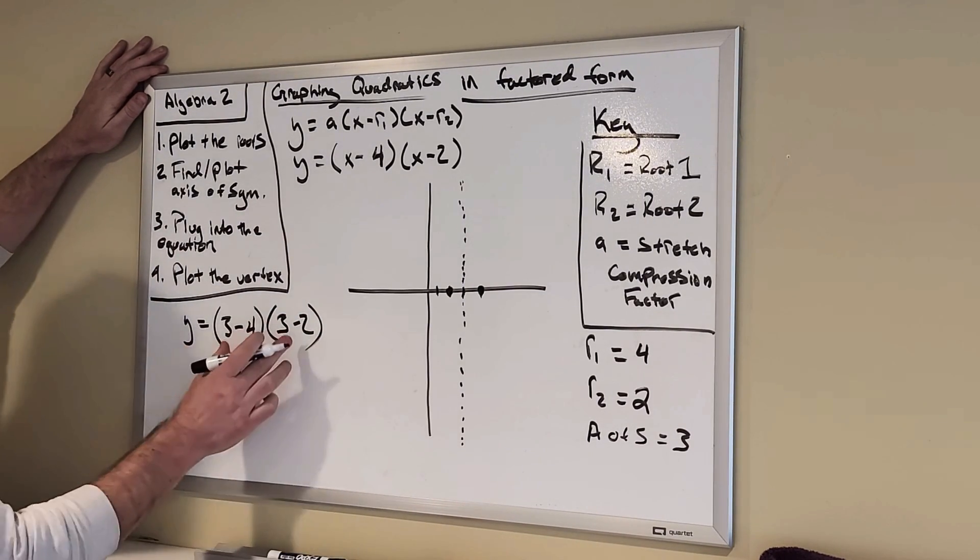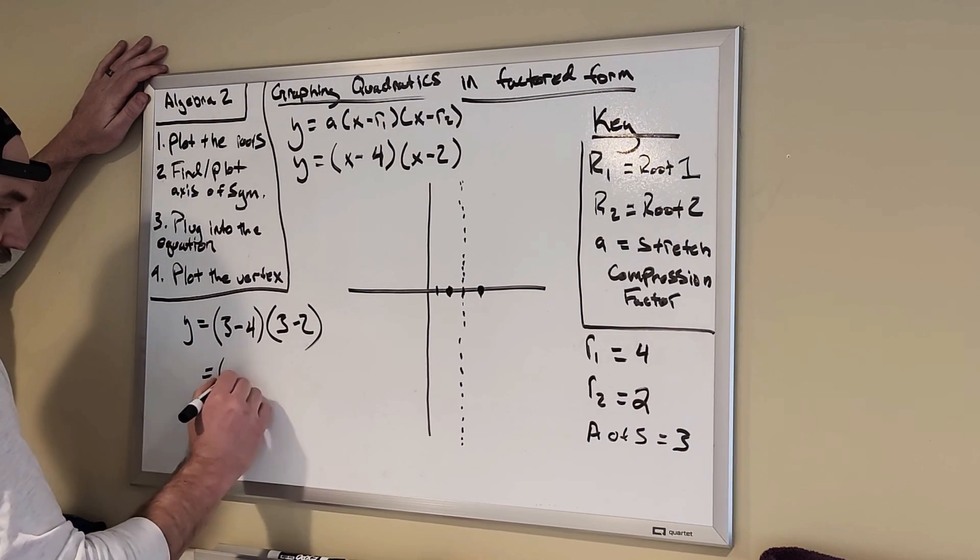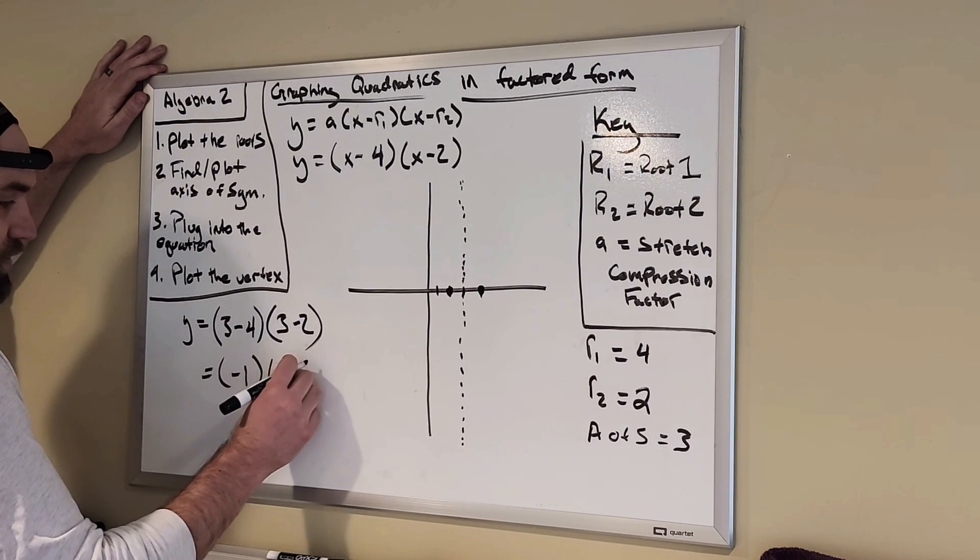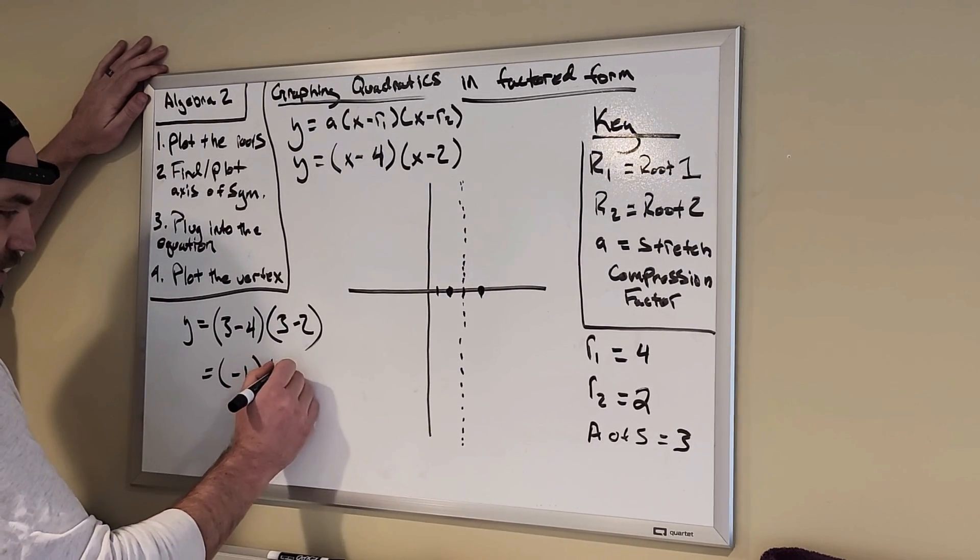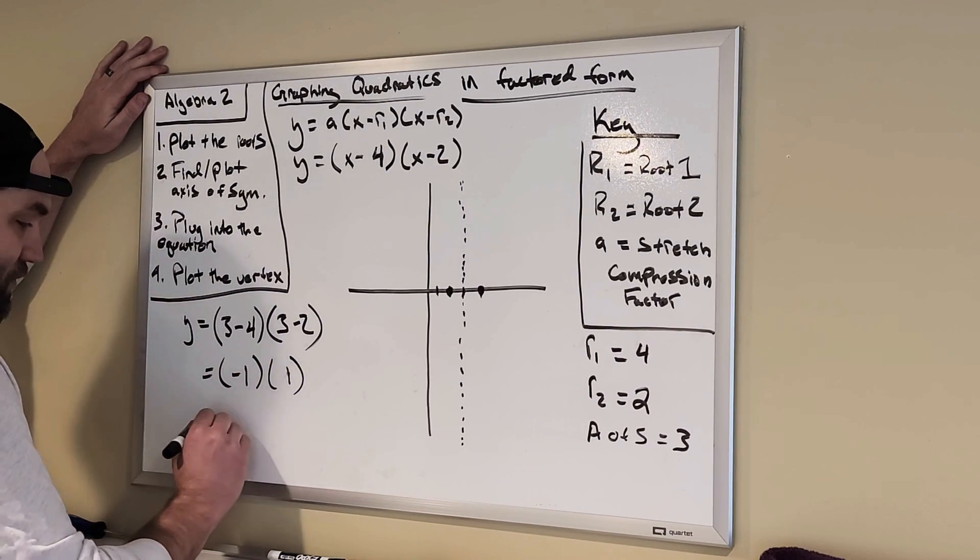Easy enough. I use my order of operations here. 3 minus 4. So, that's going to give me negative 1. And 3 minus 2 is going to be, oops, it's just going to be positive 1. So, negative 1 times positive 1 gives me negative 1.